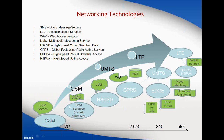Then with the circuit switched data services we were able to access SMS, which is the short message service. When high speed circuit switched data was implemented, we were able to get location based services. Combining all these things we were able to transmit data services but not at a higher data rate. That is the reason to access the internet we really need to have the GPRS facility included.